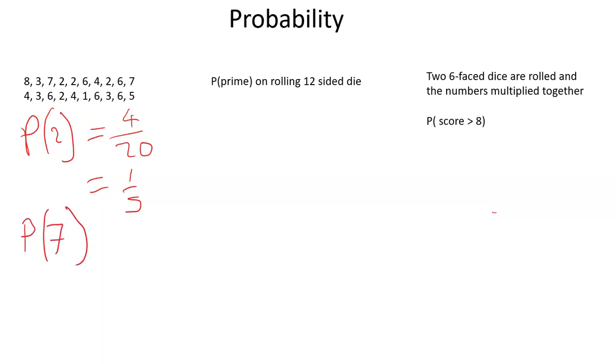Based on the experimental probability, based on what's happened already, we're suggesting that the chance of getting a two on this spinner is one-fifth. Whereas the probability of getting a seven, there's one seven there and a second seven there. There's only two of them, so that's two over 20. The probability is one out of ten. So we can look at what's more likely. This would suggest that a two is more likely.